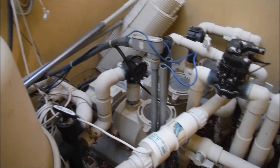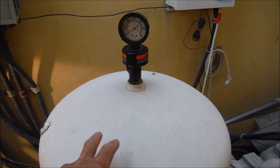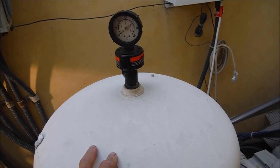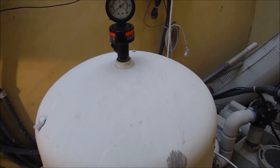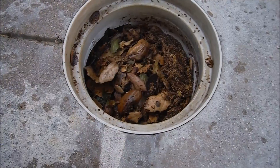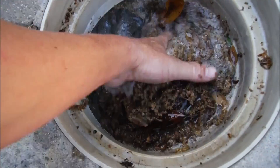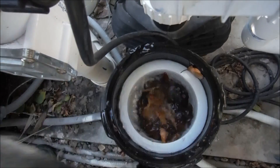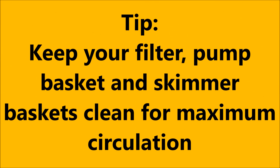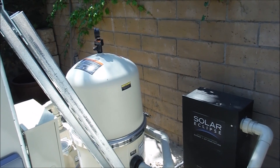Another major factor of algae growth in your pool is your filtration system. If your filter is dirty or not running properly it will definitely cause algae growth because it's not circulating the water properly. You may also have an undersized filter, so you want to upgrade your filter if it's too small. Make sure you clean your skimmer basket regularly so the pool has good flow, and also make sure your pump basket is clean.